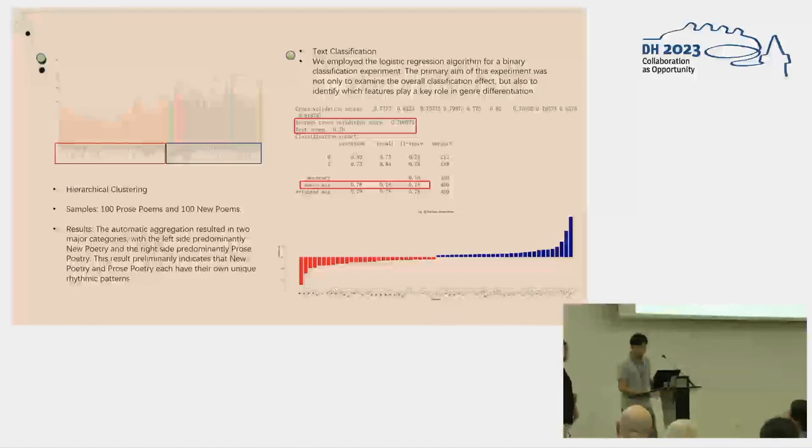With most of the samples on the left being neo-poems and those on the right being prose poems. This indicates that there are certain differences in rhythmic features between prose poems and neo-poems. To further explore the effects of rhythmic features in the regression between them,